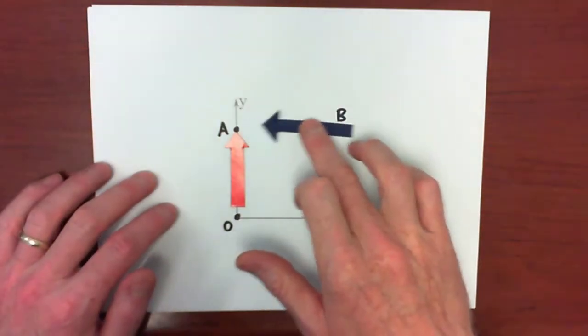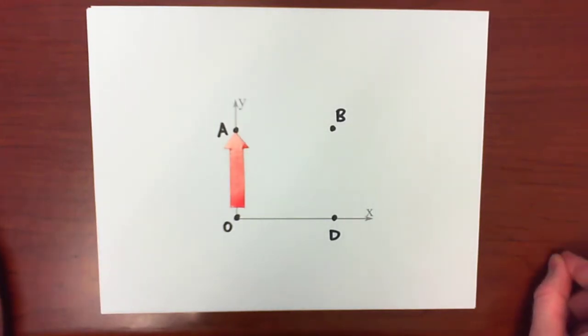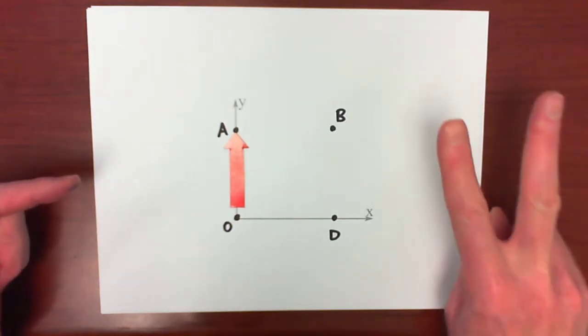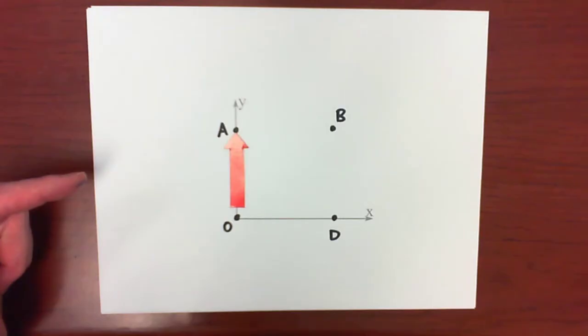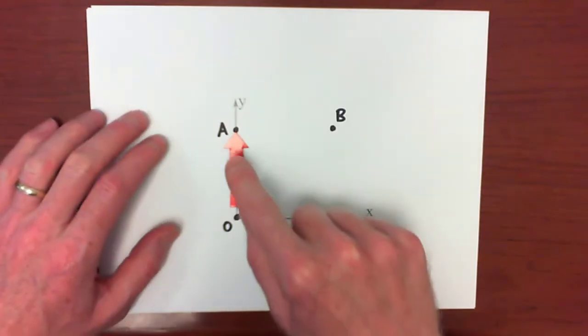Now there are many locations in a system where you'll actually have no moment from a force. Remember that a moment is a rotational tendency of a force. So given this scenario here with the force still along AO, two of the four points have zero moment from this force. Go ahead and guess what those two points are. You should know what those are.